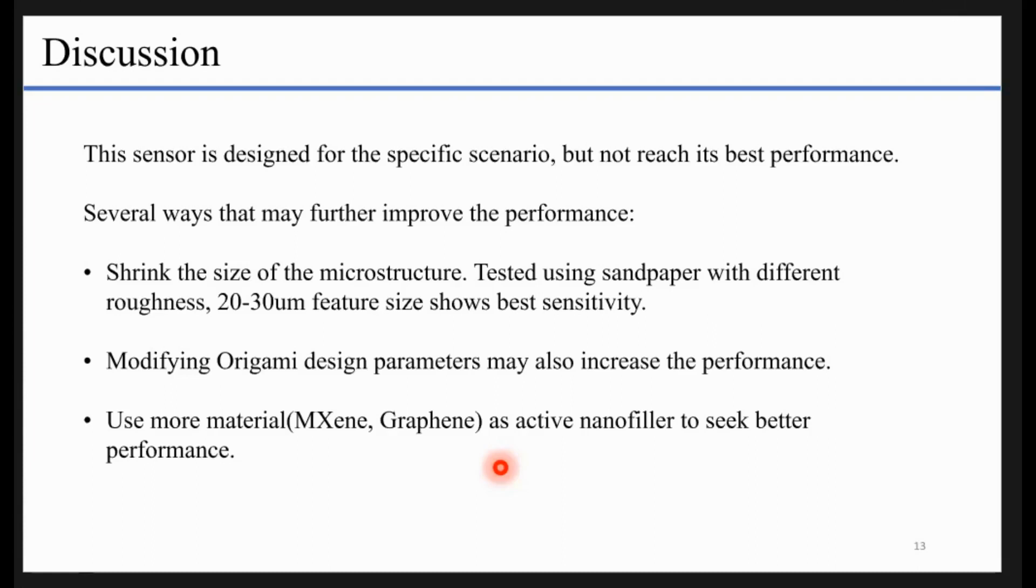We use another method. We use different sandpaper with different roughness to test how the feature size affects the sensor's behavior. We found that around 20 to 30 micrometer feature size should be the best, can perform best sensitivity. Also, we can modify the origami design parameters, which may also increase performance.